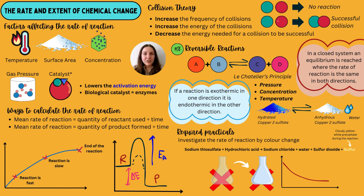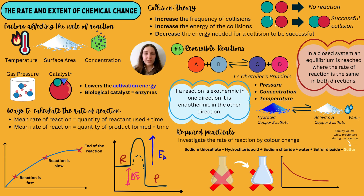Collision theory is just a fancy way of saying things banging into each other — when two reactants collide, a reaction occurs. Collision theory states that if you increase the frequency of collisions you'll have a successful reaction, if you increase the energy of collisions the same applies, and if we decrease the energy needed for a collision to be successful, this also benefits the rate of reaction. If reactants don't collide, there's no reaction; if they do, a new product will form.